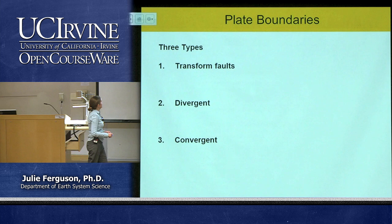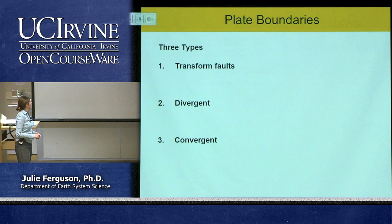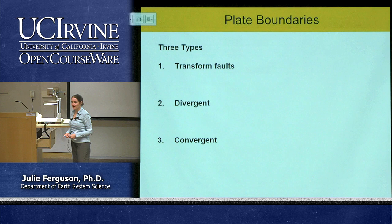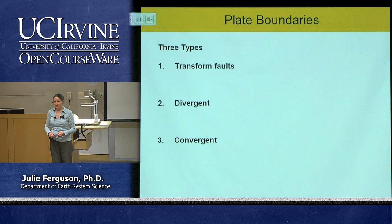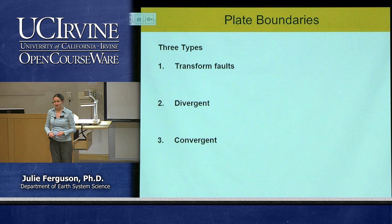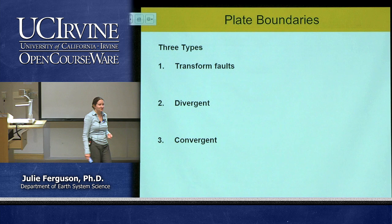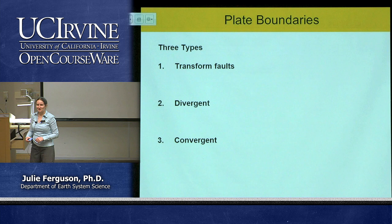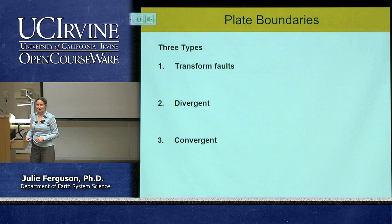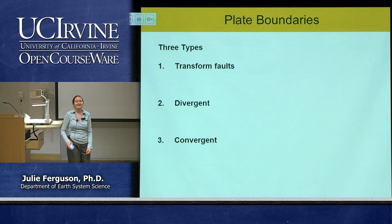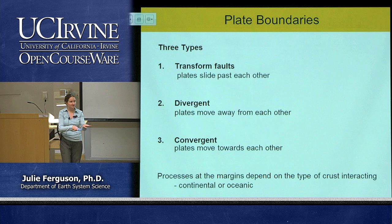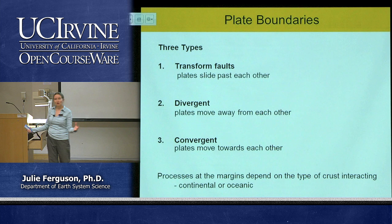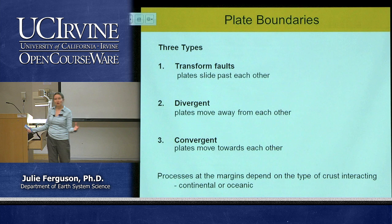There are three types of plate boundaries. At divergent boundaries, plates move apart. At convergent boundaries, plates move together. At transform faults, plates just slide past each other. To understand the landscape features and processes at each boundary, we also need to think about what type of crust is involved.